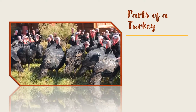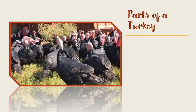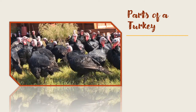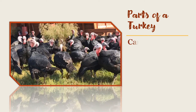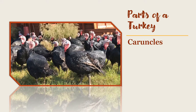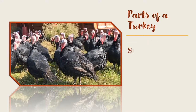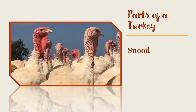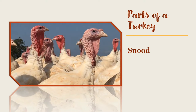So if you want to talk turkey, let's get the lay of the land by going over the parts of a turkey. The red lumps and bumps on the head of a turkey are called caruncles, but they can change color based on the mood of the turkey, so that they're more of a blue color. The long, fleshy part of the skin that hangs above the nose is called a snood, and it can be lengthened and shortened by the turkey at will.